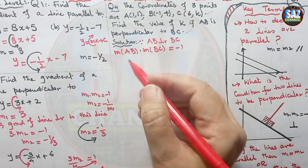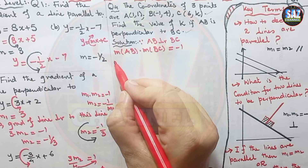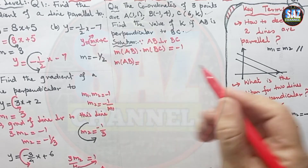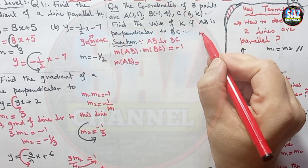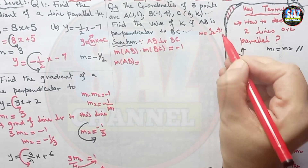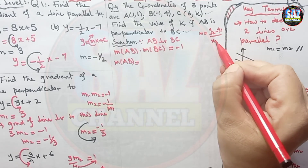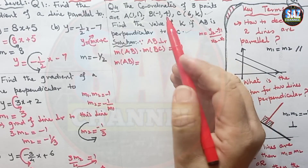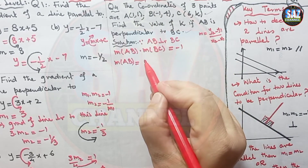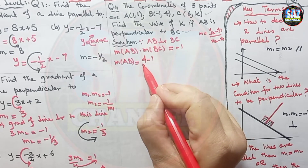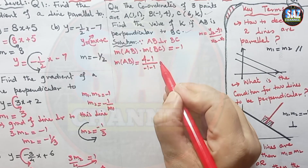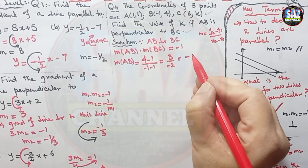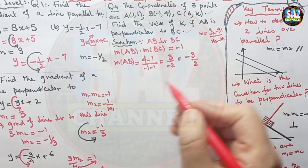We have to find the gradient of AB carefully. The formula for gradient is y2 minus y1 upon x2 minus x1. For AB, that gives 4 minus 1 upon minus 1 minus 1, which is 3 upon minus 2, or minus three-halves.